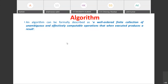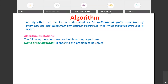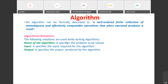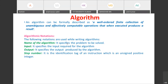There is no hard and fast rule to write an algorithm, but the following notations are commonly used. First, specify the name of the algorithm — this describes the problem to be solved. Then specify the input, which tells what input is required. Then specify the output produced. After that, write a sequence of steps along with the step number, which is an unsigned positive integer specified after the word 'step'.